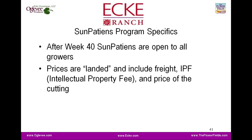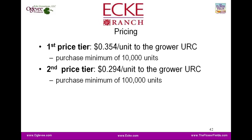The pricing provided are landed prices — that includes freight, the intellectual property fee, and the price of the cutting, all bundled together. Pricing is based on volume with tiers based on units purchased. At the minimum purchase of about 10,000 units, you're looking at approximately 35.4 cents per unit delivered with the intellectual property fee. If you're growing 100,000 units or more, the price drops down to just under 30 cents per unit. Volume dictates pricing and those pricings are provided to the brokers.